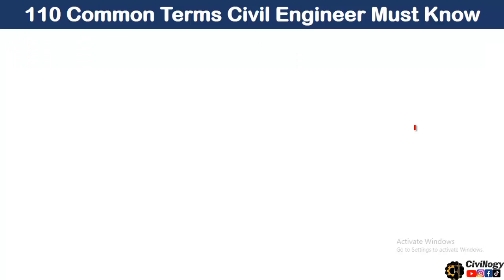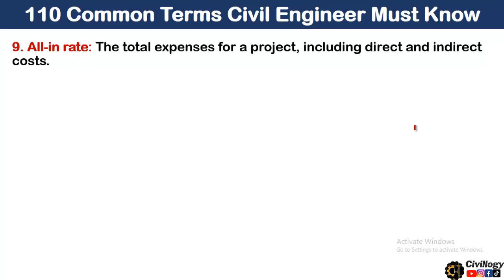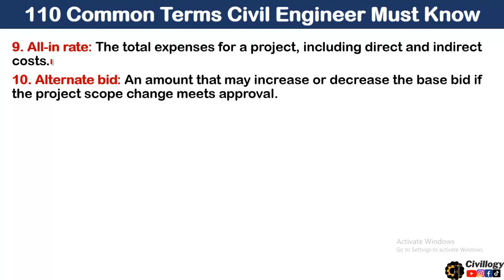The ninth point is all in rate. All in rate is defined as the total expenses for a project including direct and indirect costs. It covers all the expenses required for the completion of any project.